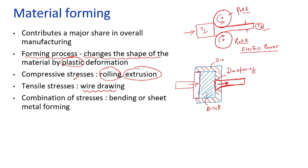In certain applications we apply both types of stresses — that is called bending. When we apply both compressive stresses as well as tensile stresses, the application of both stresses in combination is called the bending operation. So in bending we are applying both tensile as well as compressive stresses.